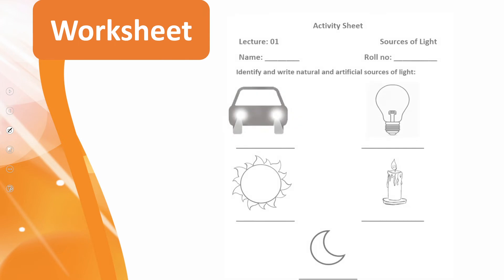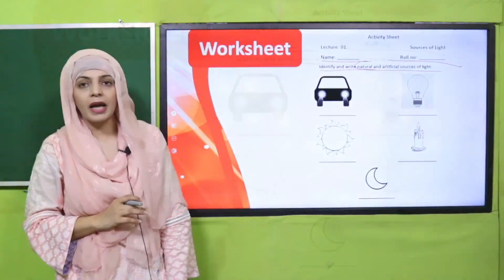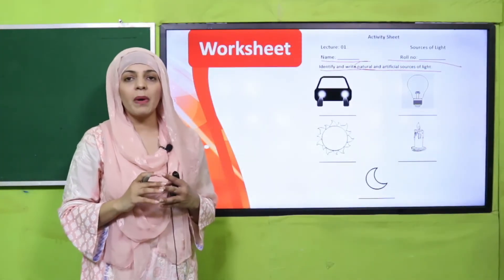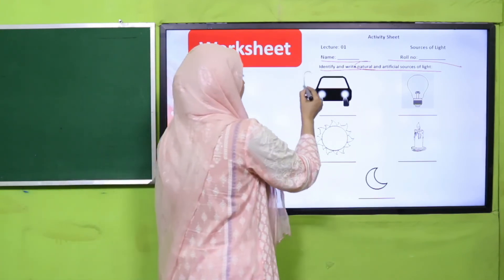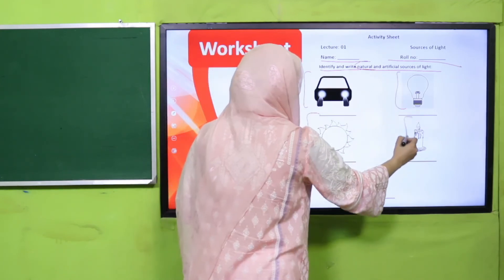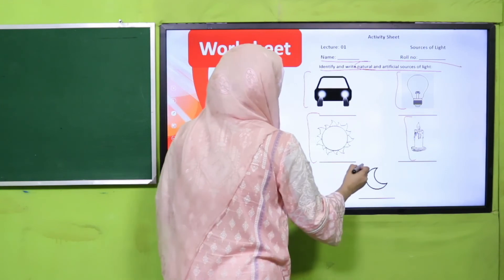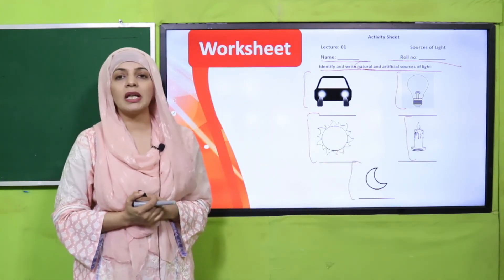Now is the time for practice. You can download this worksheet from the description box below this video or get it in print form from your teacher. Write down your name and roll number. Identify and write natural and artificial sources of light. For example: car lights are artificial, sun is a natural source, candle is an artificial source, and moon is also a natural source of light. Pause the video and quickly complete this worksheet.